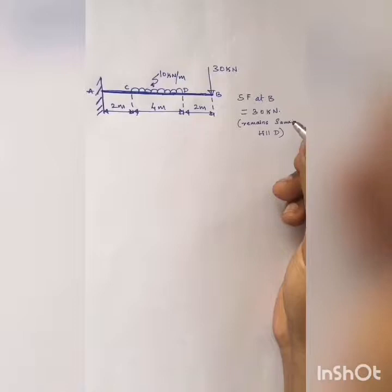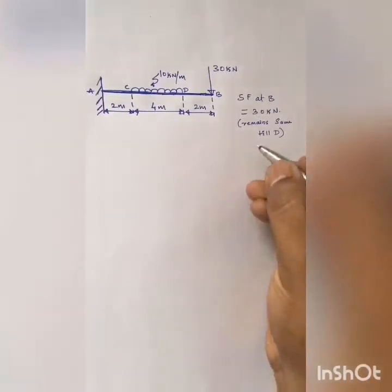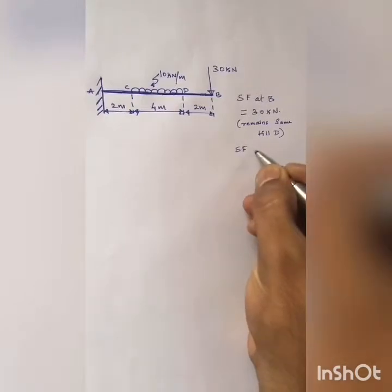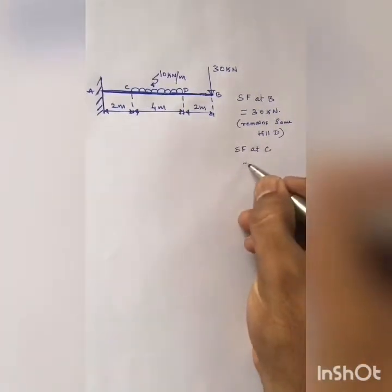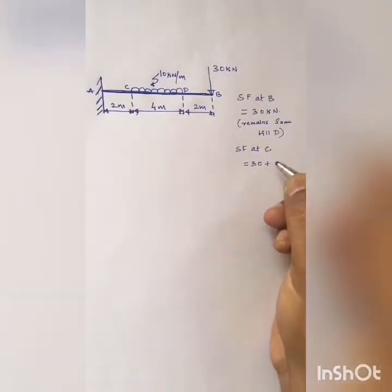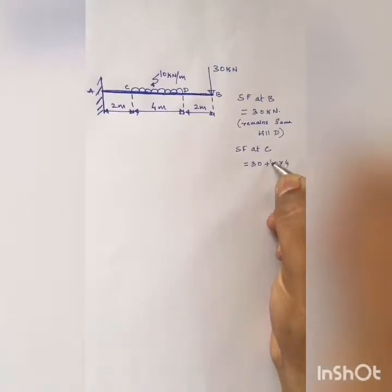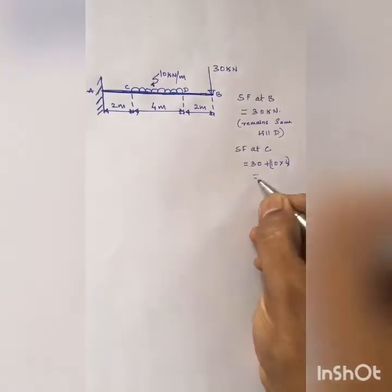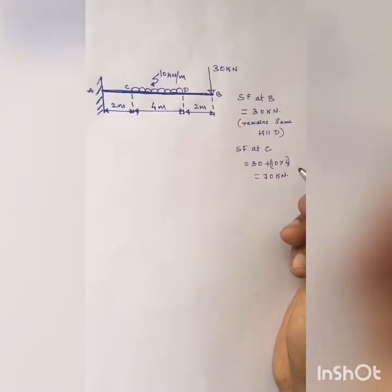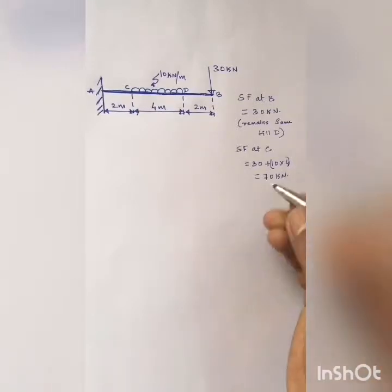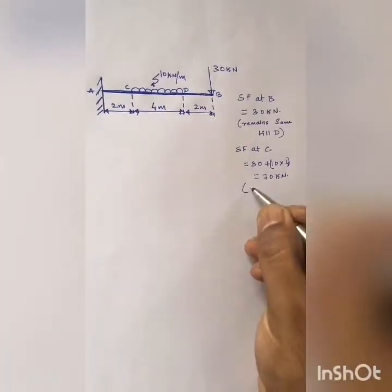Next, we need to find out the shear force at point C. Shear force at point C will be equal to 30 kilo Newton, which is already there, plus I also have to consider the effect of the UDL — that is, multiplying the magnitude of UDL into the length over which it acts: 30 plus 10 into 4. So the total shear force at C will be 70 kilo Newton. This will remain the same till point A since there is no other force from point C to point A.